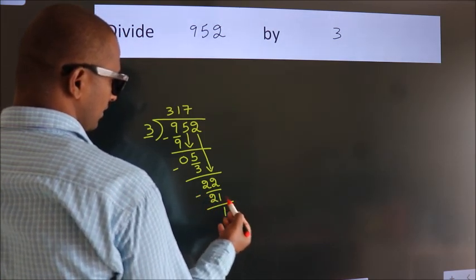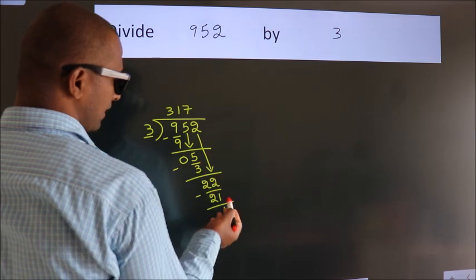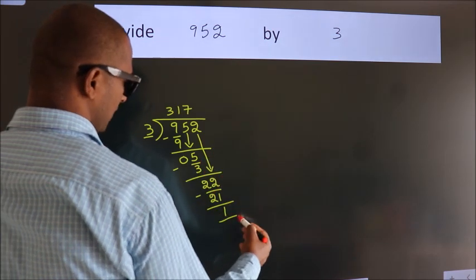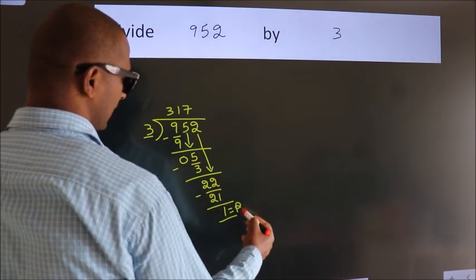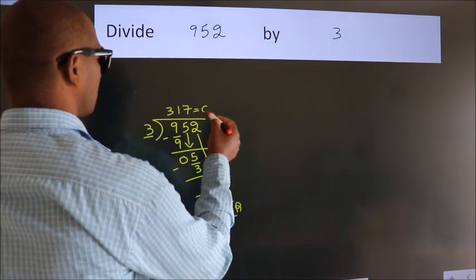After this, no more numbers to bring it down. So, we stop here. This is our remainder. This is our quotient.